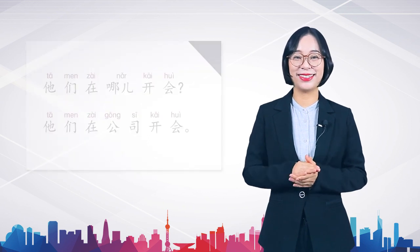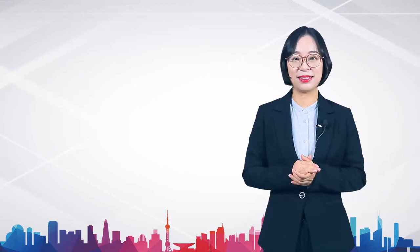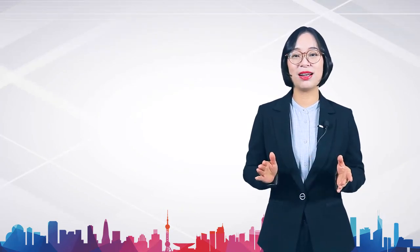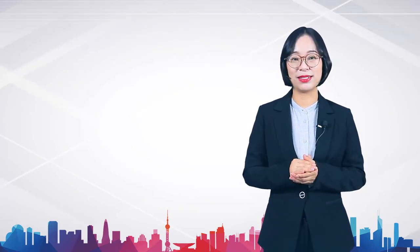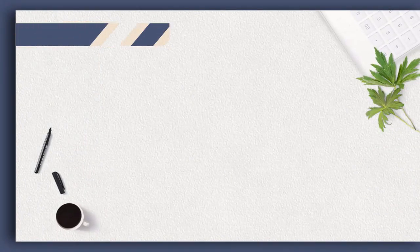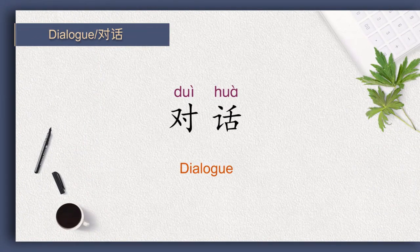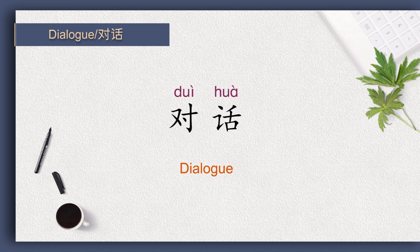Now let's come to the text. Please listen to the dialogue first and then answer the questions. 李经理,您忙吗? 王经理十一点来见您。现在几点? 现在十点。 不行,我十点半开会。 下午两点呢? 两点半吧。 好的,我知道了。 Did you understand?